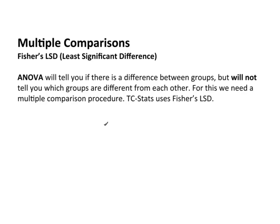We know from ANOVA that somebody's different — at least one group is different. ANOVA will tell you if there's a difference between the groups, but it's not going to tell you which groups are different from each other. For this, we're going to need a multiple comparison test, and we're going to use Fisher's LSD because that's what we programmed into TCStats.